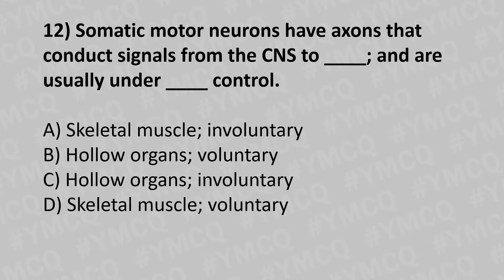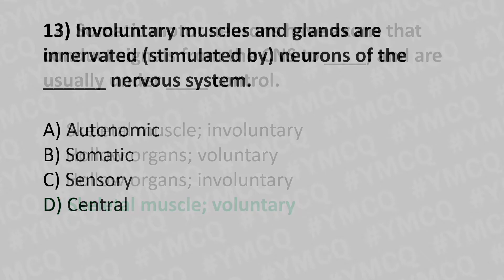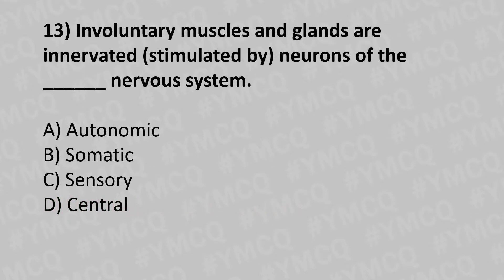Moving to our twelfth question. Somatic motor neurons have axons that conduct signals from the CNS to dash and are usually under dash control. Option A: skeletal muscle and involuntary. Option B: hollow organs, voluntary. Option C: hollow organs, involuntary. Option D: skeletal muscle, voluntary. And the answer is option D: skeletal muscle, voluntary.